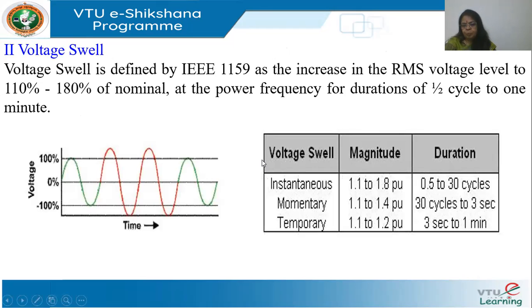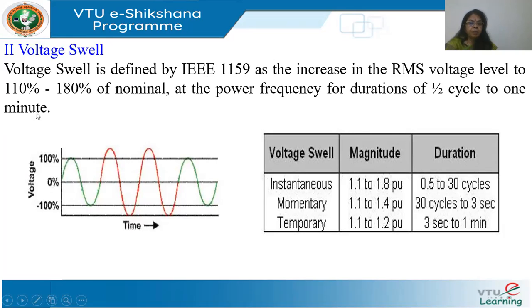The opposite of sag is swell, analogous to over voltage. The IEEE 1159 standard defines a swell as an increase in RMS value from 110% to 180% of nominal, with a duration of only half a cycle to one minute. Subtypes include instantaneous (lasting up to 30 cycles, less than one second), momentary (up to three seconds), and temporary (three seconds to one minute).